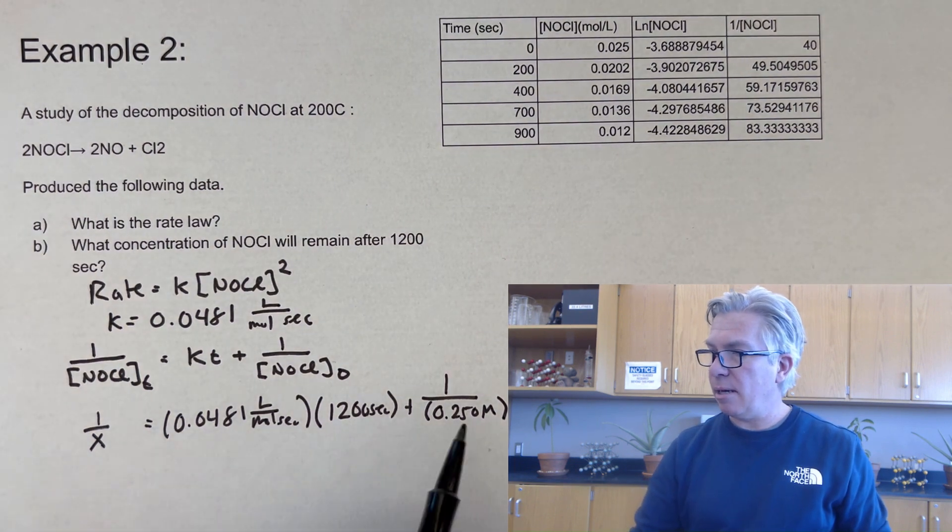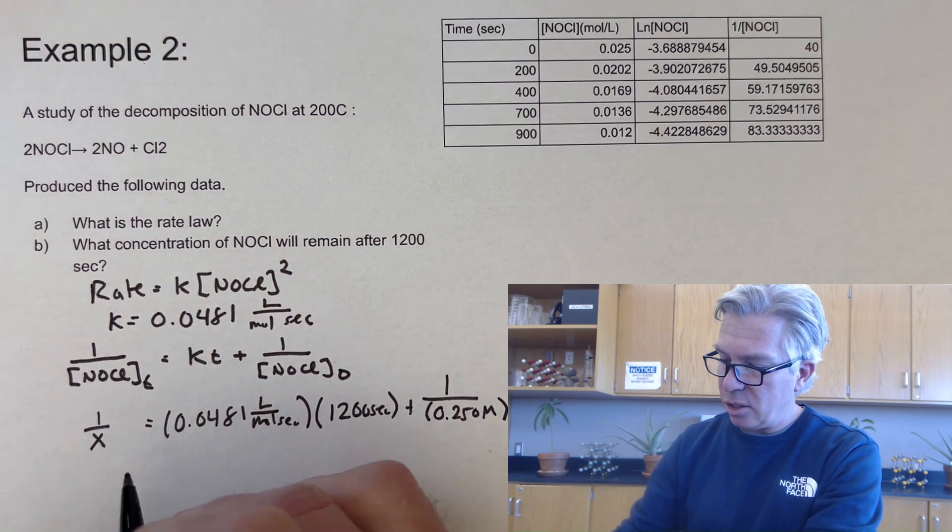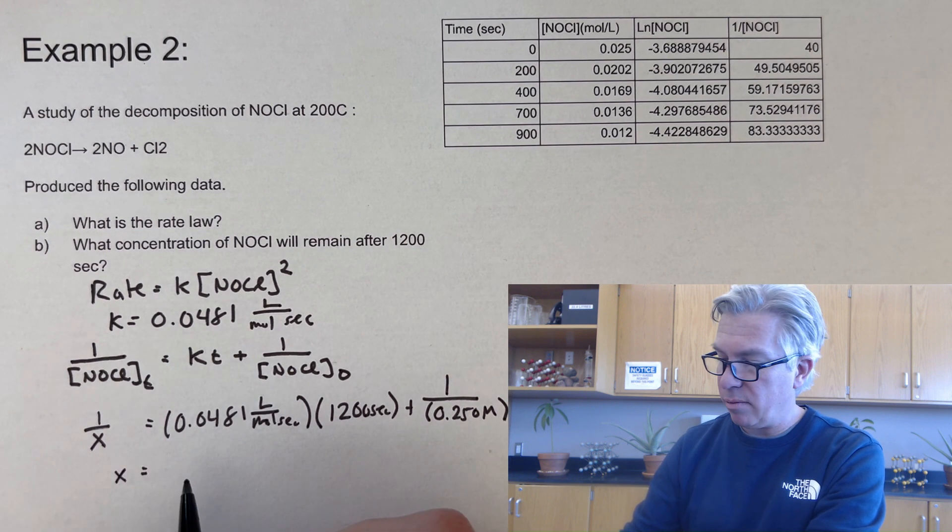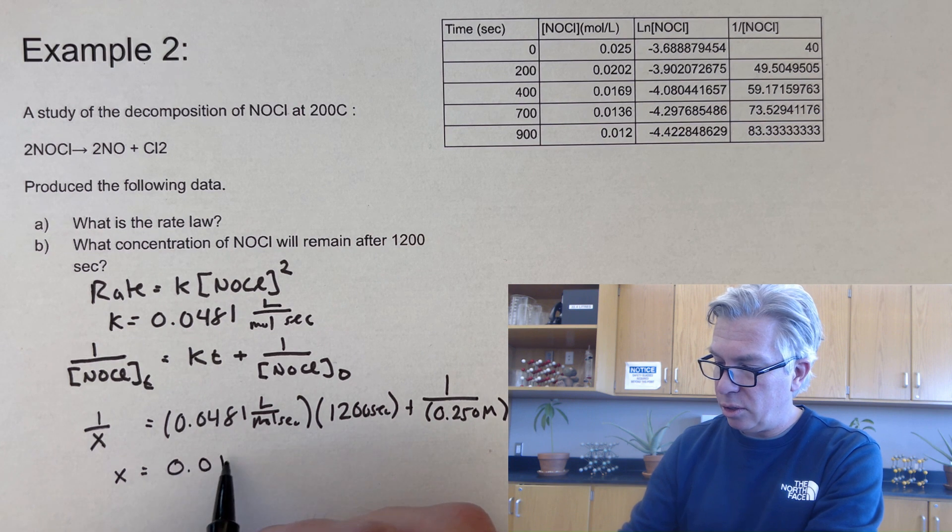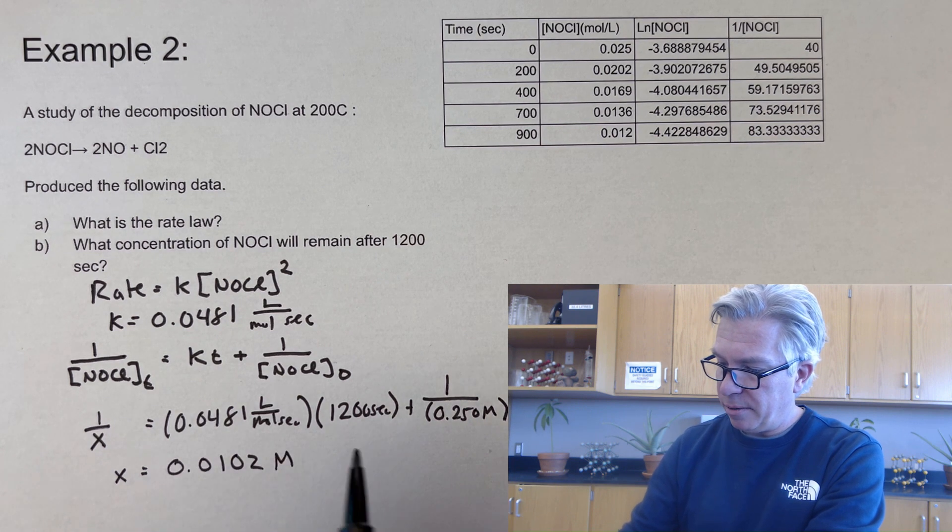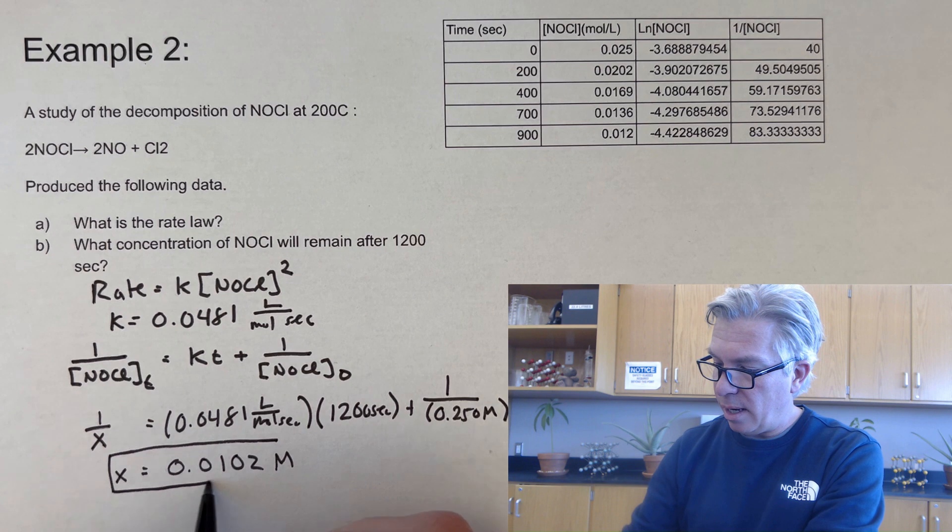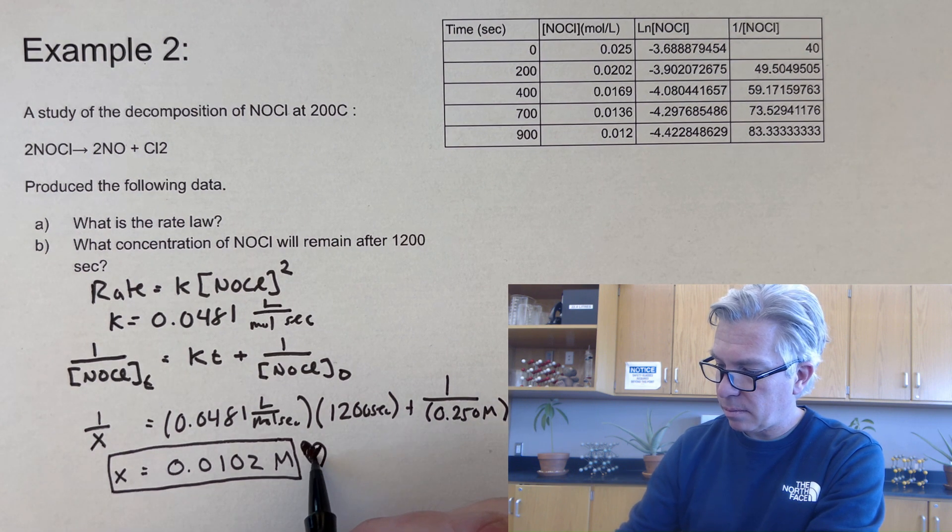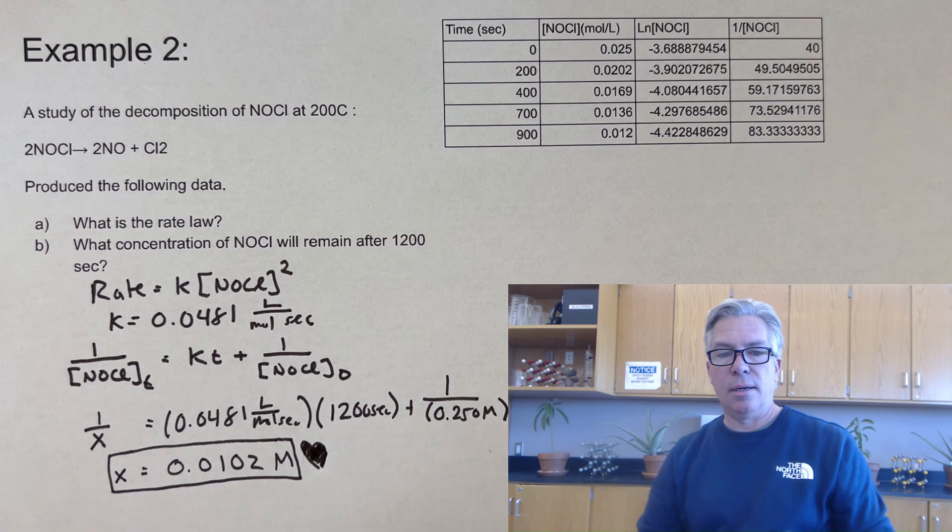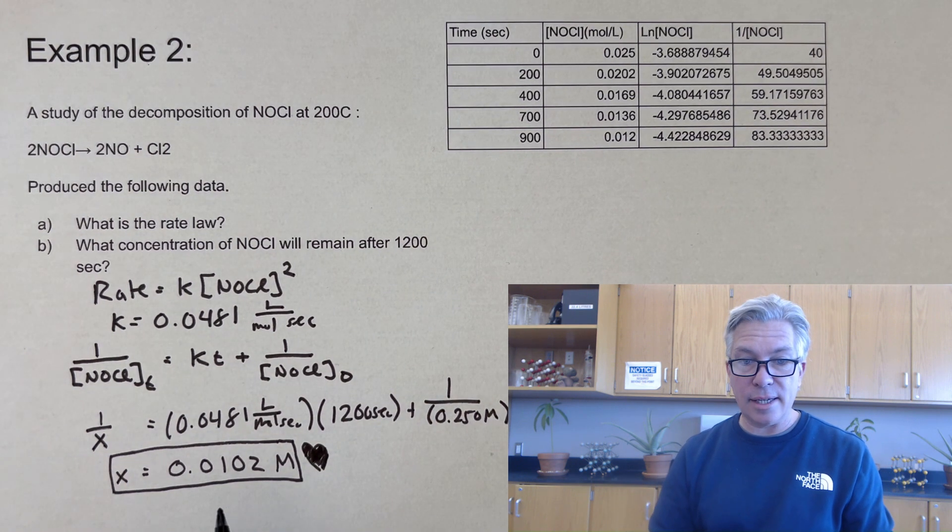And the original concentration from the data table is, sometimes you have to look back at the data, 0.250 moles per liter. Okay. So I've got everything set up. These are easier than natural logs. I think the first order integrated rate law. So I'm just going to calculate it real quick and it comes out 0.0102 moles per liter.